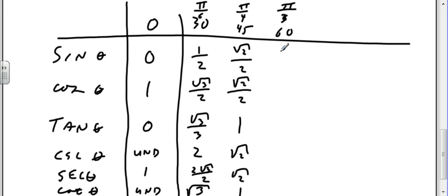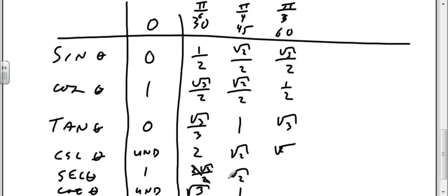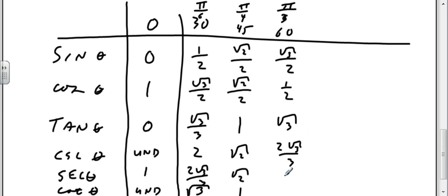Pi over three, or 60 degrees: sine is square root of three over two, cosine is one-half, tangent is square root of three. Cosecant is two times square root of three over three, secant is two, and cotangent is square root of three over three.